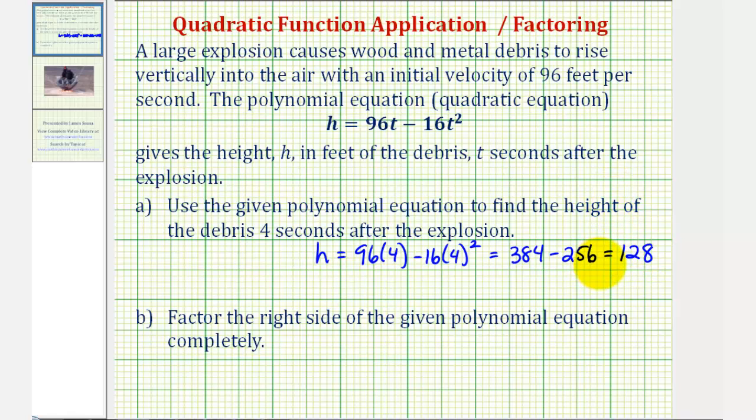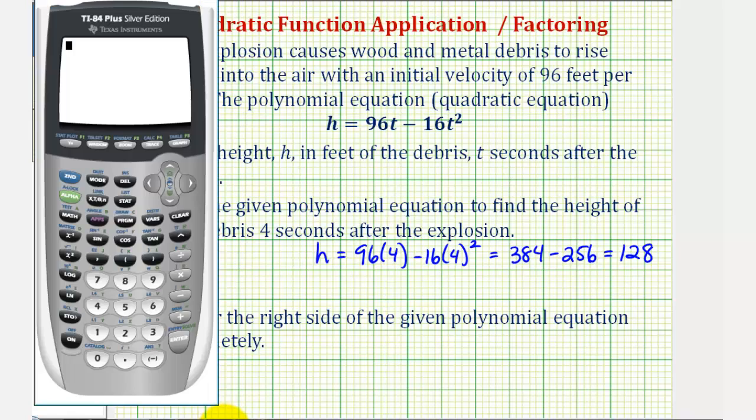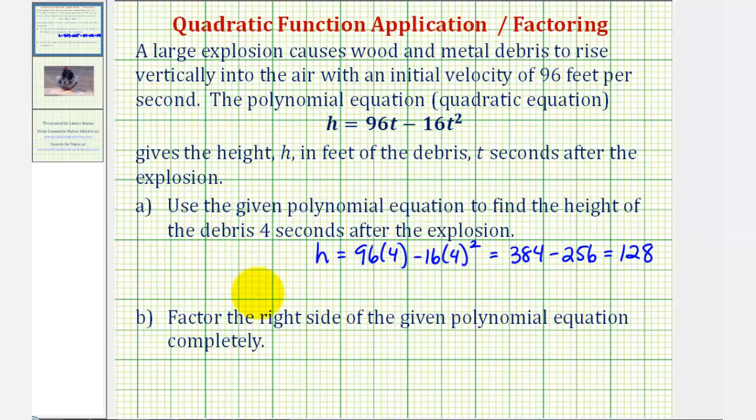Let's go ahead and check this on the calculator. So we have 96 times four minus 16 times four squared. Here's the squared key, and enter. So this verifies our value. Therefore, after four seconds, the height of the debris is 128 feet.